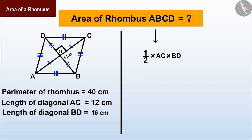Thus the area of rhombus is 96 square centimeters.